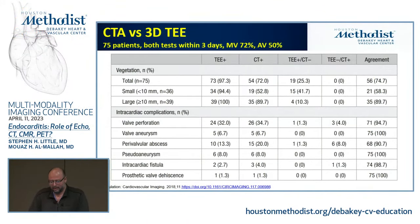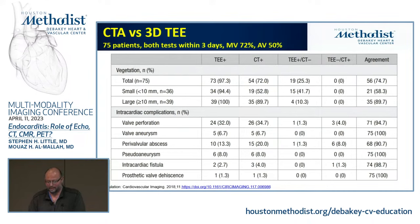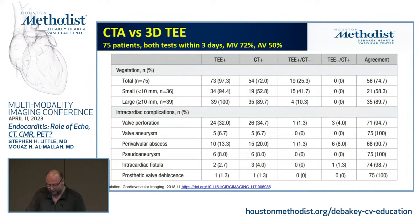So TEE is best for detecting the vegetation itself. Where CT has an edge is mostly looking at intracardiac or surrounding tissue complications — perivalvular abscess, valve perforation, and fistulas. That is where CT may have an advantage compared to TEE.